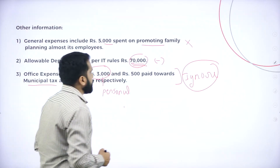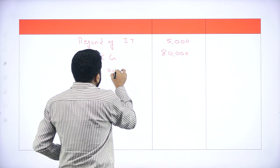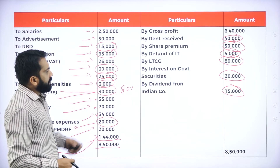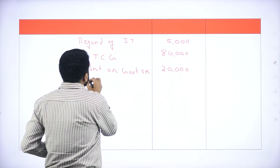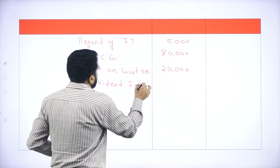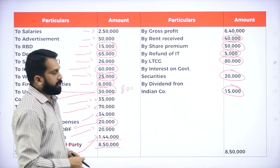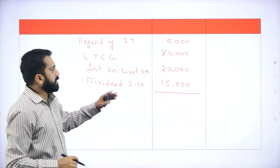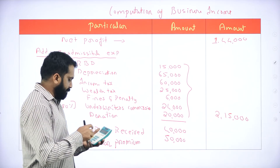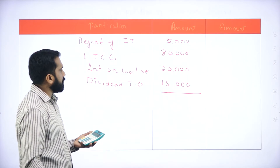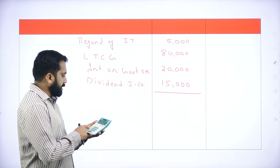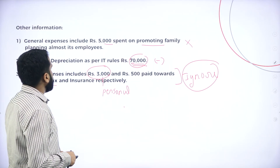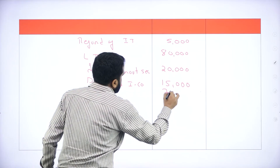Interest on government security — 20,000. Dividend from Indian company — 15,000. We're done with all these informations. So: 40,000 + 50,000 + 5,000 + 20,000 + 15,000 = 1,30,000. Along with that, we have one more adjustment — depreciation 70,000. Adding 70,000, we get 2,00,000. We are supposed to minus this.